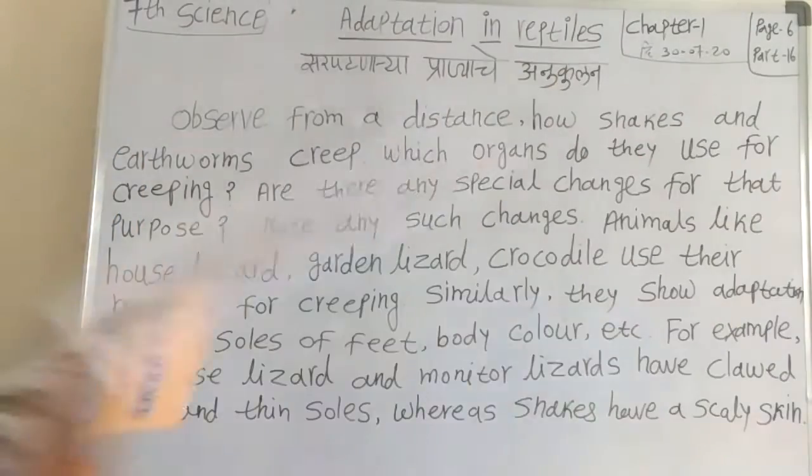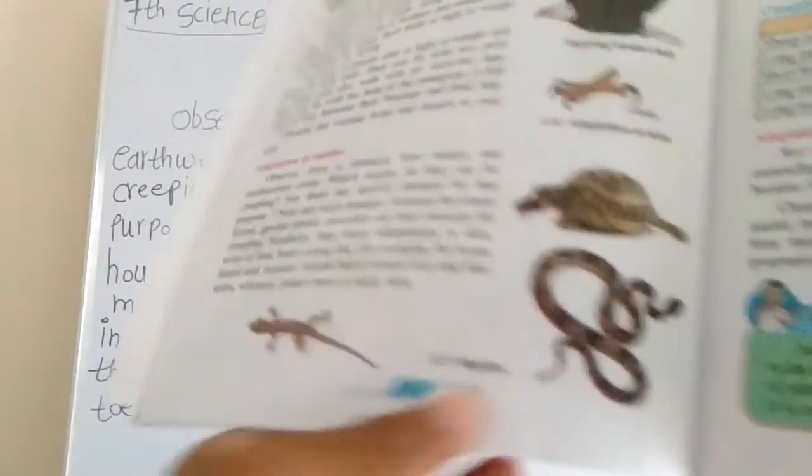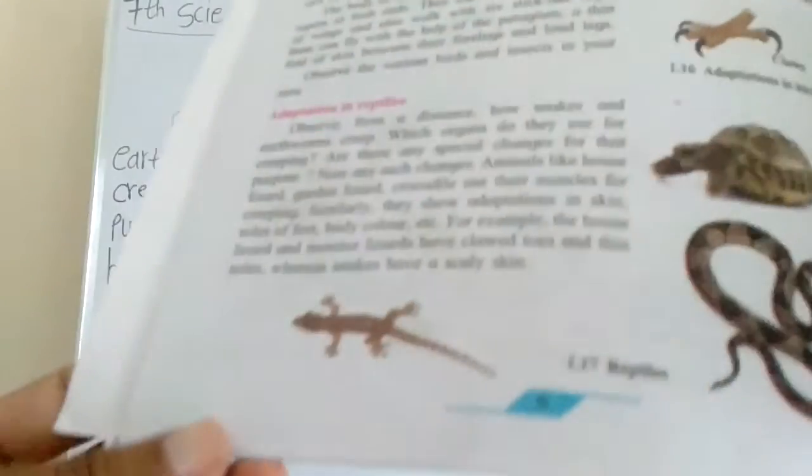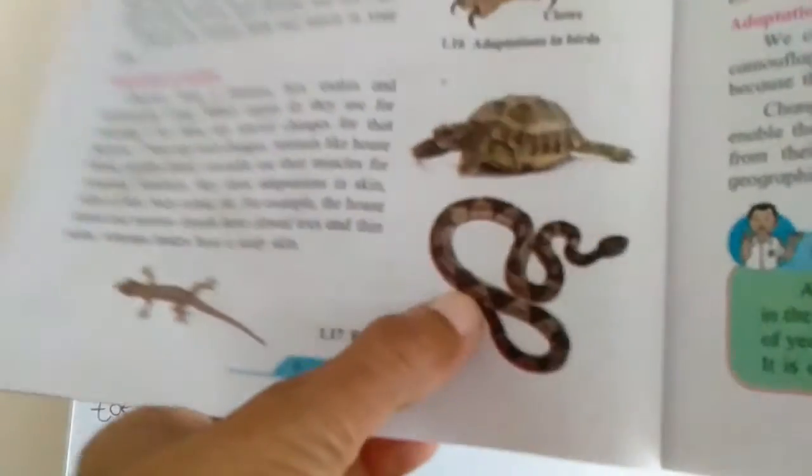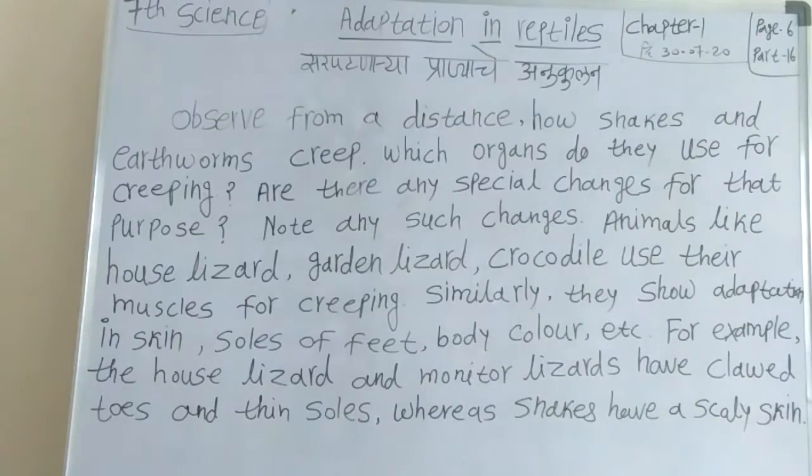This is a tortoise. See here — snake, house lizard, garden lizard, monitor lizard. These animals are reptiles. Earthworms, snakes, house lizard, tortoise — these are reptiles. Reptiles means Sarpatnarya Prani.